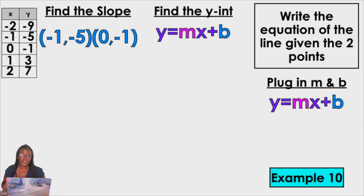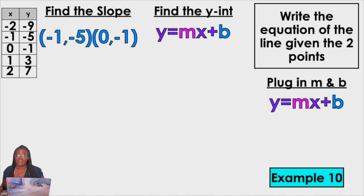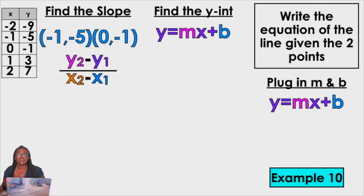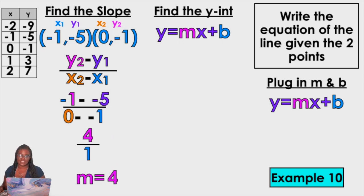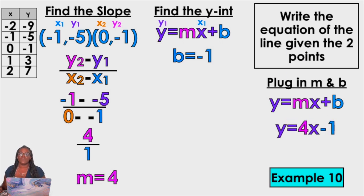Last example — looking at the table first, then choosing two points. Are we going to make the same mistake as last time? No. We chose negative 1 comma 5 and 0 comma negative 1. Why did I choose 0 comma negative 1? Because it is a y-intercept — the first number is a 0. Finding the slope: negative 1 minus minus 5, which is negative 1 plus 5 — that gives me 4. 0 minus minus 1 — that's 0 plus 1 — is 1. 4 over 1 is 4. B equals negative 1 because they gave it to me in the table. My answer is Y equals 4X minus 1.